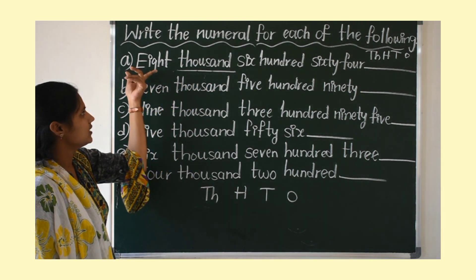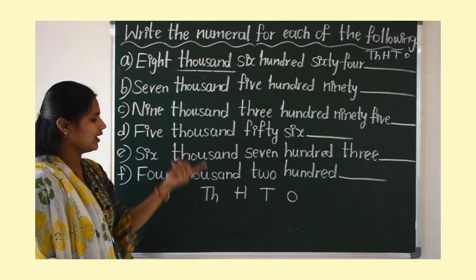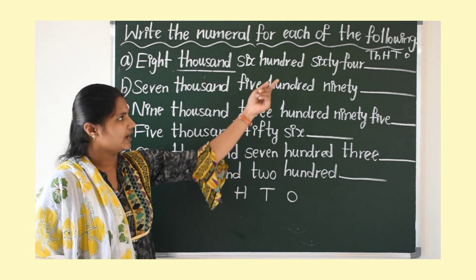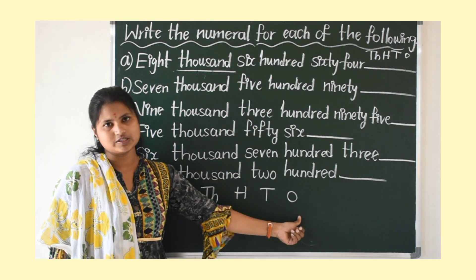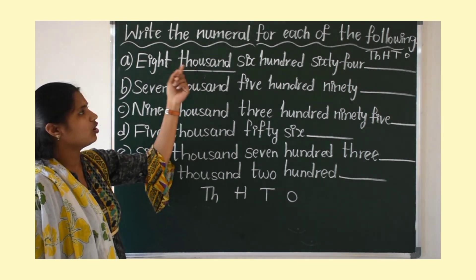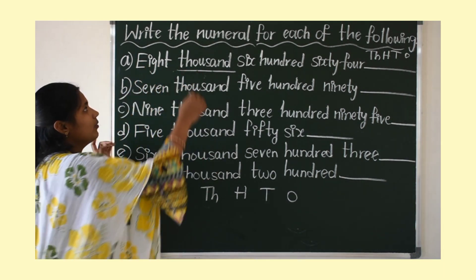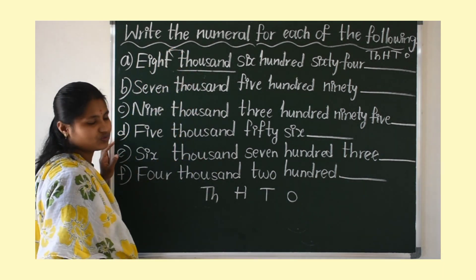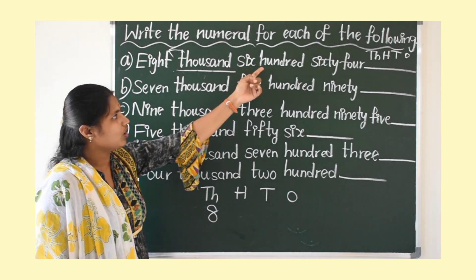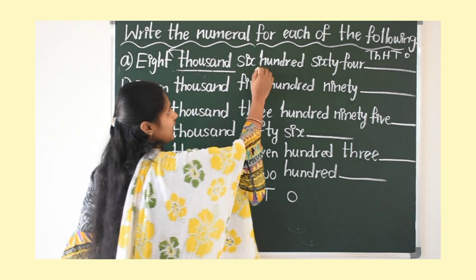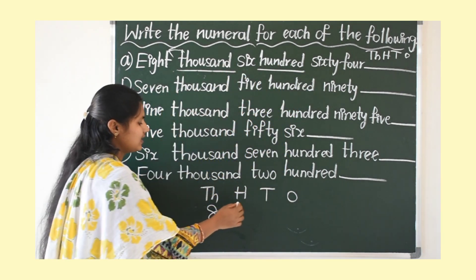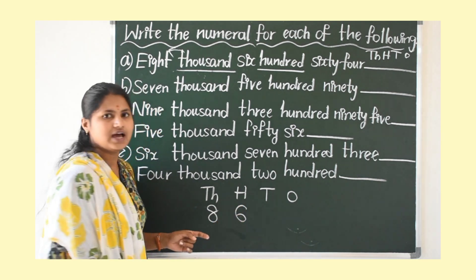After that, see how many 1000's are there — write in the 1000's place. How many 100's are there — write in the 100's position. Then 10's place and 1's place. Now let's start: 8000. How many 1000's? 8000, so write 8 in the 1000's place. Next, how many 100's? 600's, so write 6 in the 100's place.